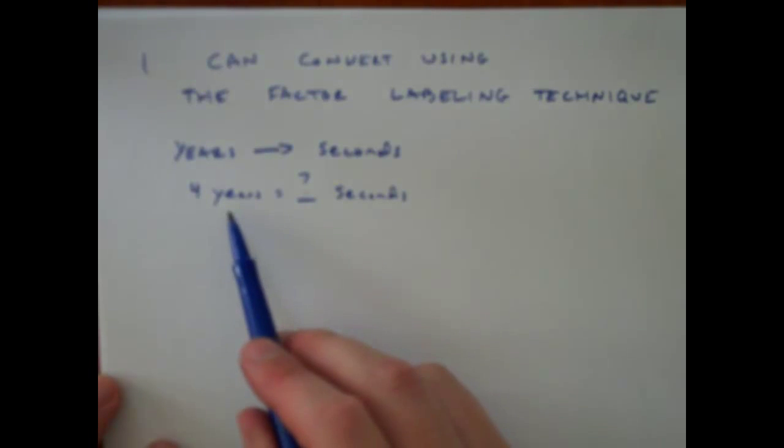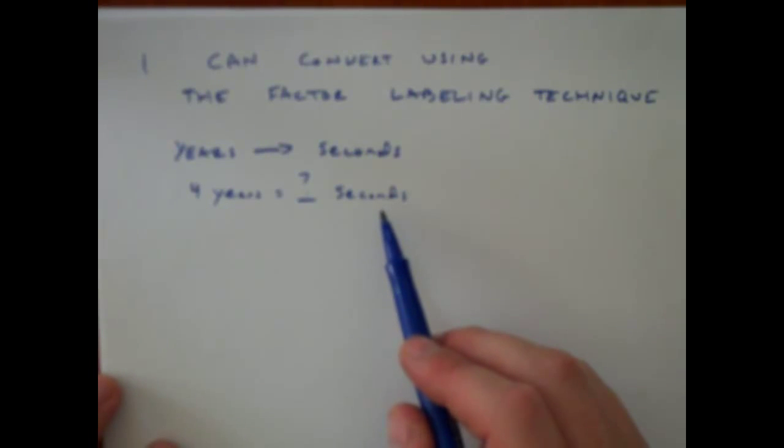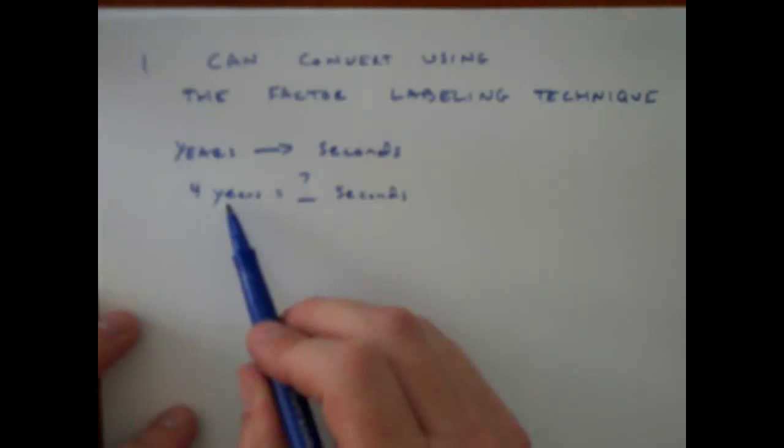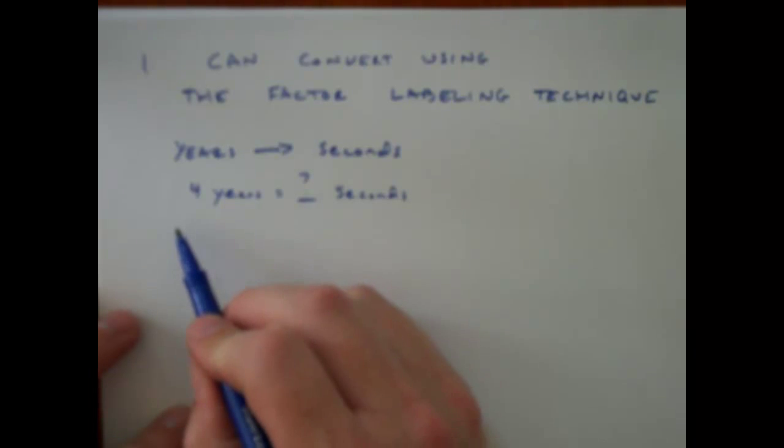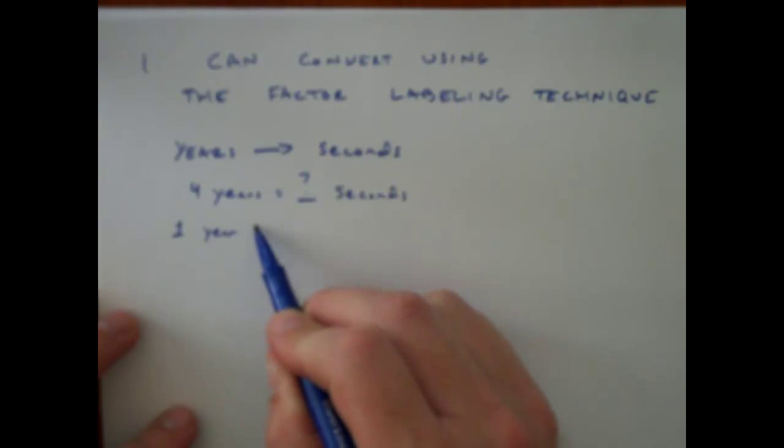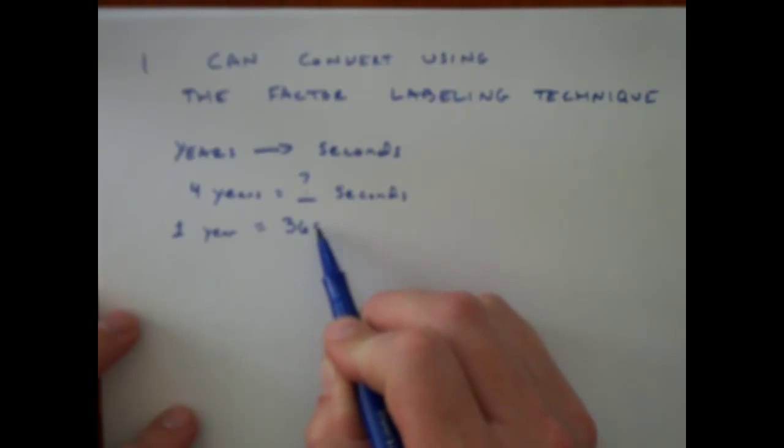So I'm starting with four years, and I've got to convert all the way over to seconds. First I've got to write down what I know. So I know how many days are in a year, so I can convert my years to days. So I can say one year equals 365 days.